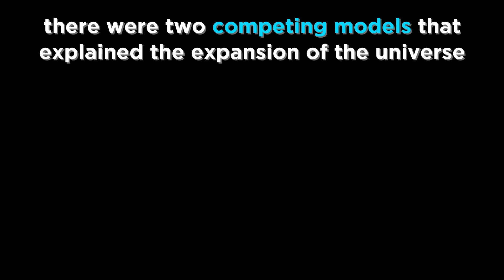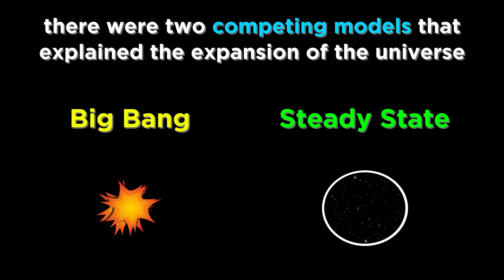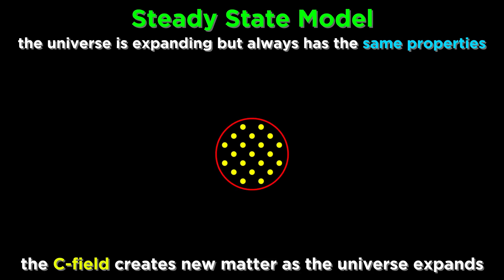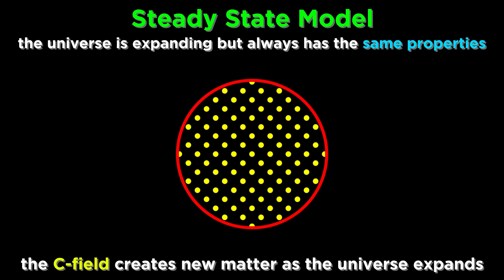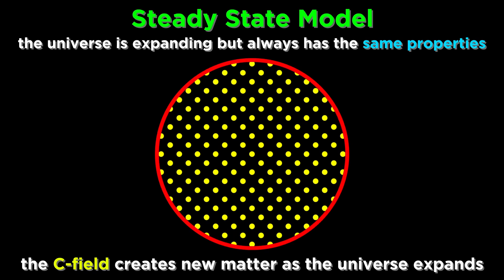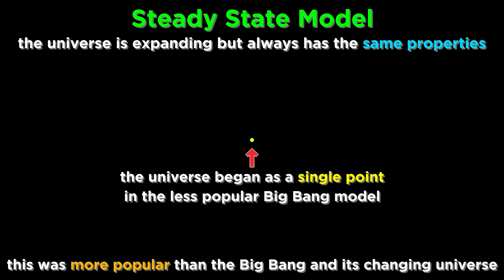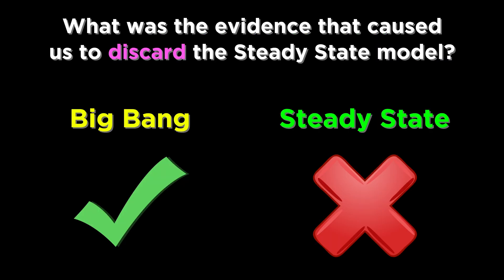Once it was accepted that the universe is expanding, the Big Bang model was proposed, but it had a competitor in the steady state model. This proposed that the universe was expanding but has the same properties at all times. In order for this to be true, the model postulated something called a C-field, which continuously creates new matter as the universe expands, so as to maintain the same overall density for the universe. This seems absurd now, but at the time it was more popular than the Big Bang model, which postulated that the properties of the universe change dramatically over time, beginning from an extremely hot and infinitely dense point. So what was the evidence that cropped up to result in the discarding of steady state in favor of the Big Bang?